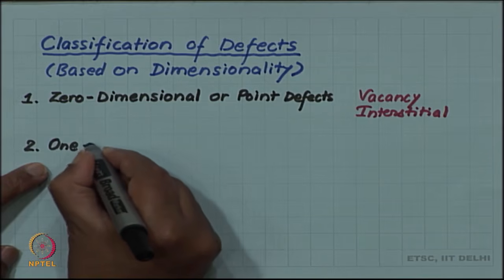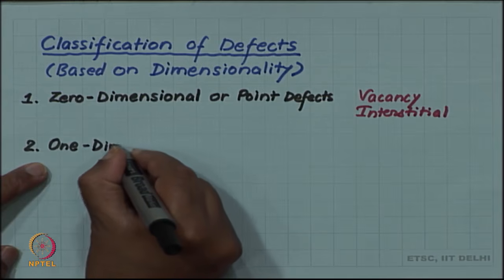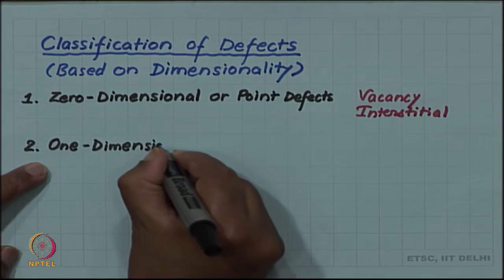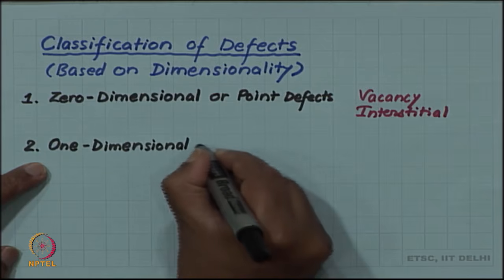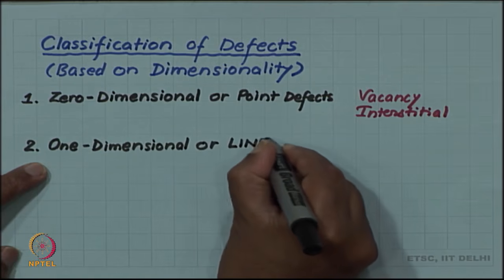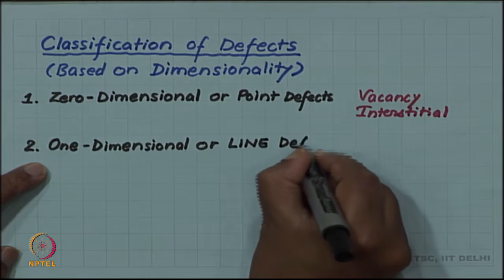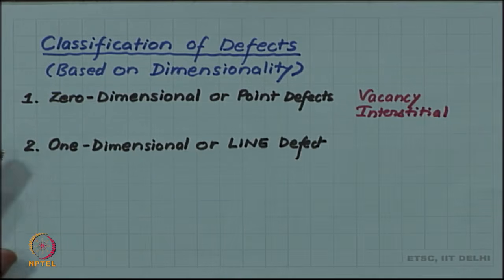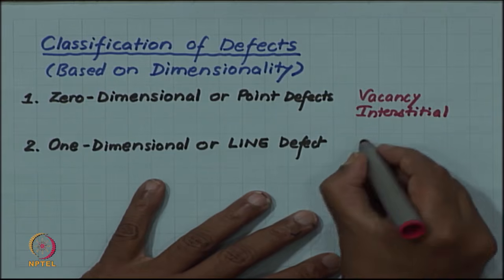We can have one-dimensional line defect, and the example will be dislocation.